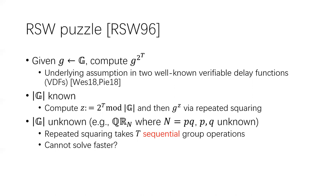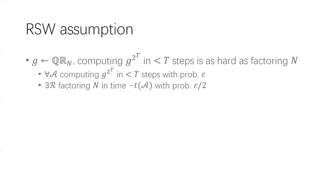The question is whether you can solve this puzzle faster than T steps. The RSW assumption says that computing G^(2^T) in fewer than T steps is as hard as factoring N.